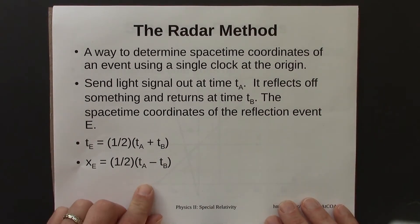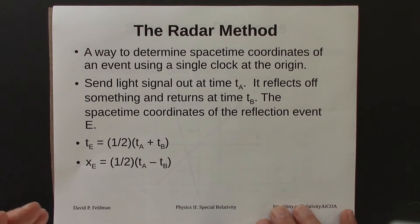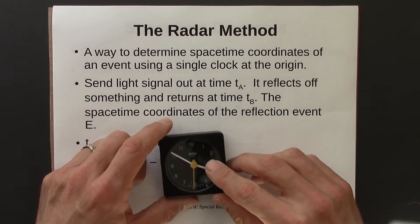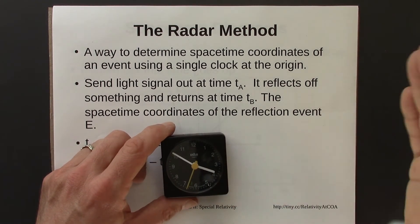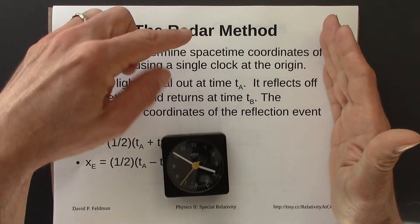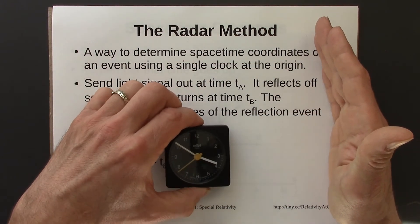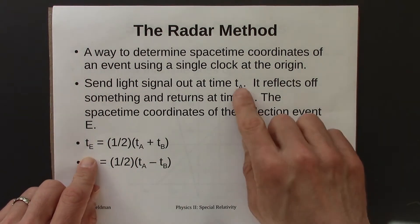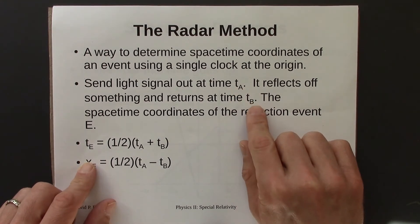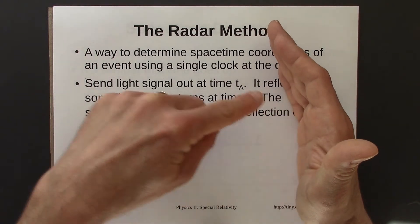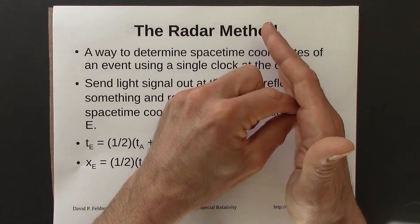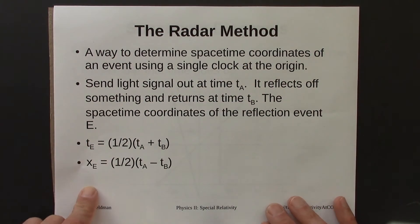One particular way to do that is the radar method — a way to determine the space-time coordinates of an event using just a single clock. You shoot out a light beam from a clock, it hits an object and reflects back. You record the departure time T_A and the return time T_B. The event — the reflection of the light beam — has space-time coordinates given by the formula derived from those two times.